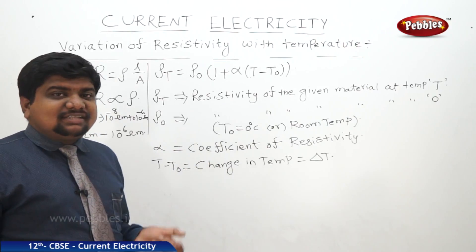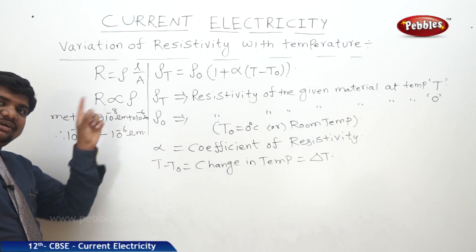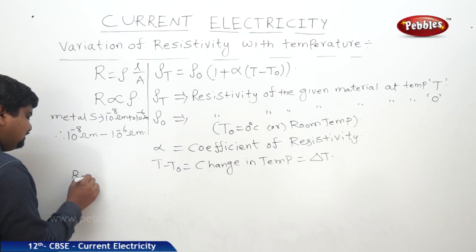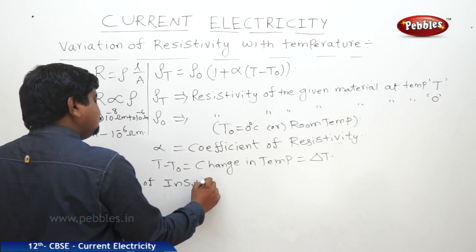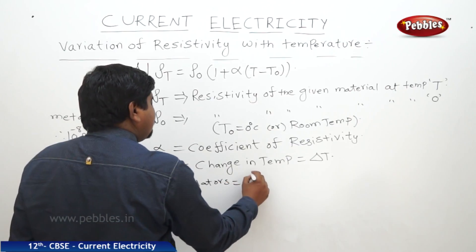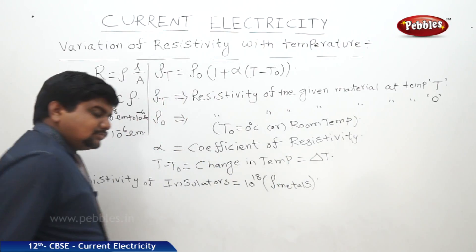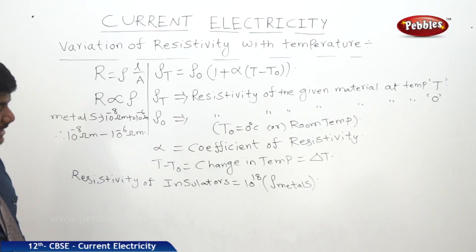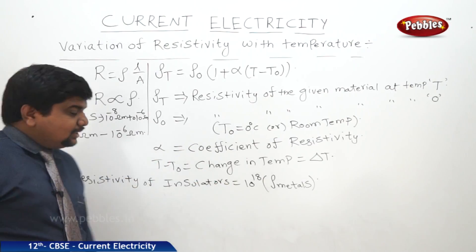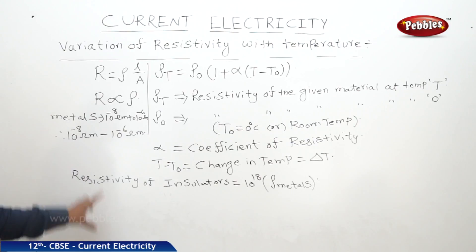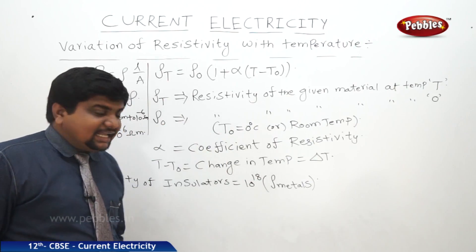Insulators like ceramic, rubber, and plastic have resistivity of 10^18 times that of metals. Because insulators have higher resistivity, metals have low resistivity. Since resistivity and conductivity are reciprocals, conductivity of metals is more. The conductivity of insulators is less, negligible, and nearly zero. That's why its resistivity is 10^18 times that of metal.